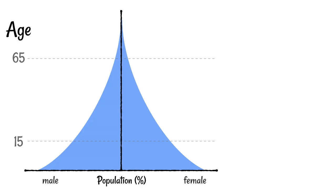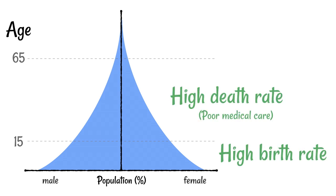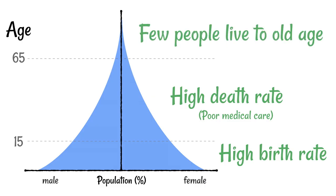In this particular population, there's quite a high birth rate, but it goes down quite quickly as the population ages, which means there's a high death rate — probably associated with quite poor medical care. As a consequence, there are also very few people living to old age. This represents a more primitive society, the way things would have been for most populations in the very early stages of human civilization.